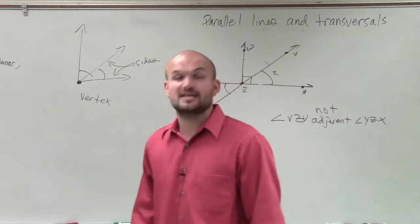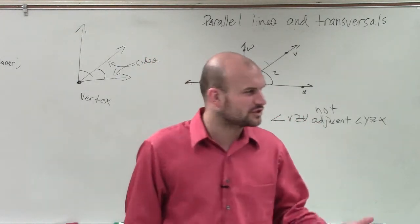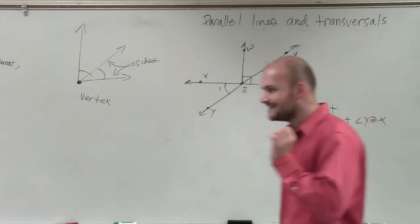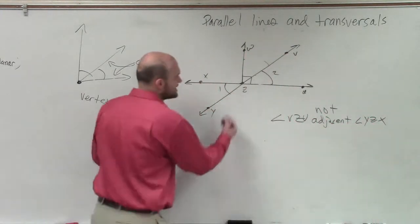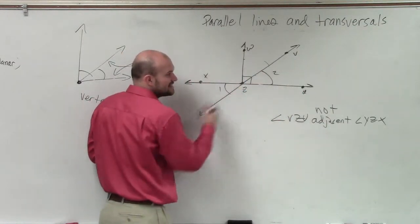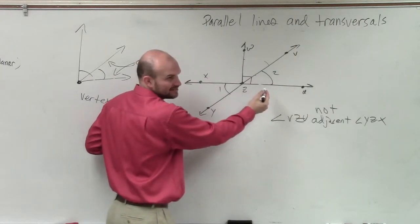They share a vertex, and they do not share any sides, right? But how do we get vertical angles? Vertical angles come from what? Intersecting lines. Do we have intersecting lines here? Yes. So therefore, these share a vertex. They don't share any sides. So these are vertical angles, not adjacent angles. Okay?